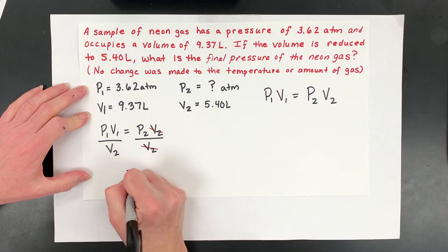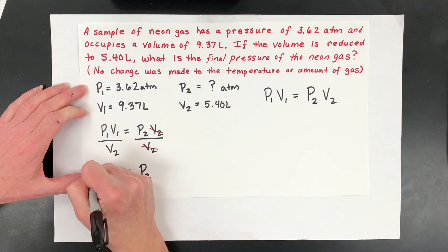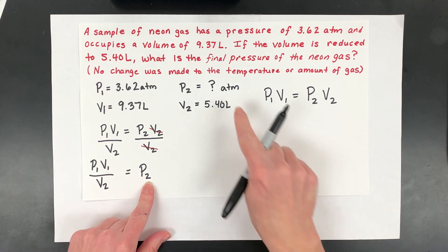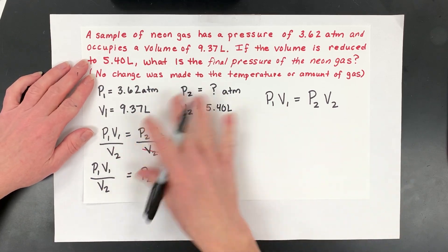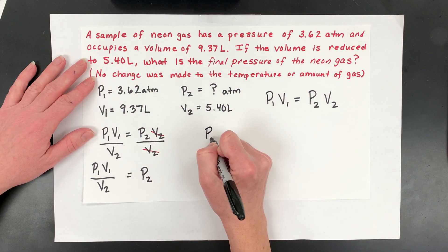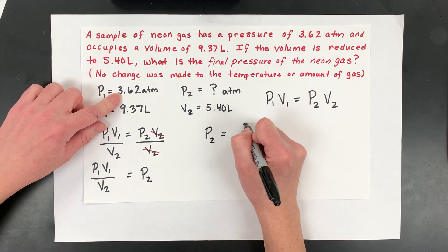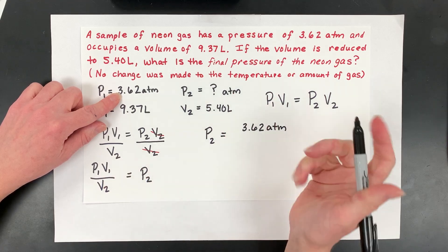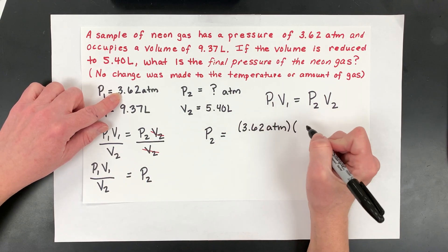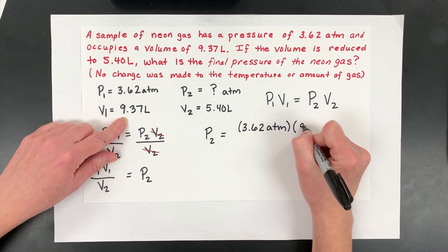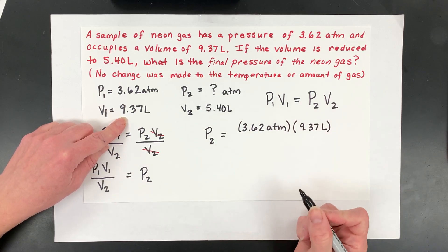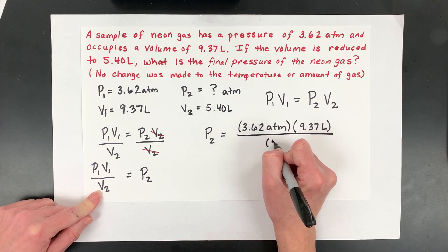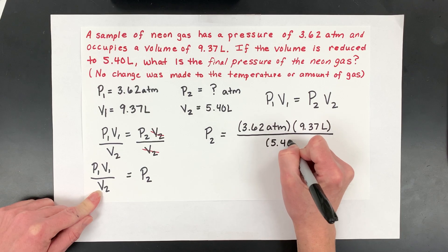So you take your equation, and you divide both sides by the variable you want to kind of move over, so that you isolate for just the one you're looking for. What that means is then these V2s are kind of canceled, and you're left with P2 on this side, and then you have P1V1, those again, remember your initial, and then V2. So now I've isolated for the variable I'm trying to find. I'm going to keep it in atms. So pressure two is going to be P1, which is 3.62 atm, and then I'm going to multiply that by V1, which is 9.37 liters, and then I'm going to divide that all by the new volume, which is 5.40 liters.